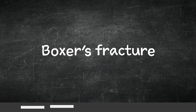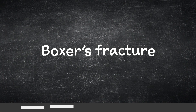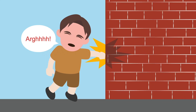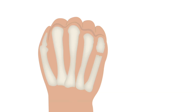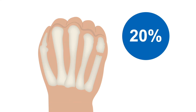Let's start with the Boxer's Fracture. This type of fracture is commonly seen in people who get frustrated and punch a wall. This traumatic blow to the fourth or fifth knuckle results in a metacarpal neck fracture. Boxer's fractures are pretty common and account for 20% of all hand fractures.